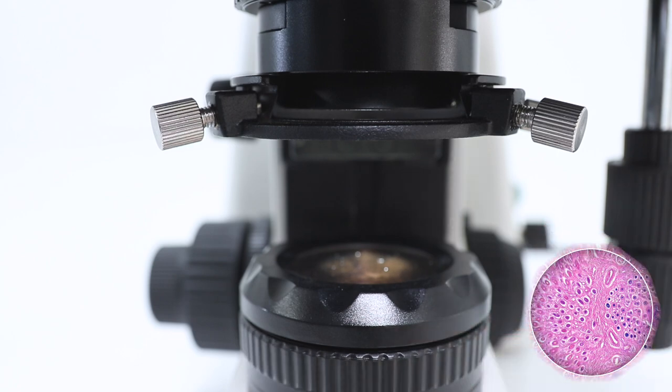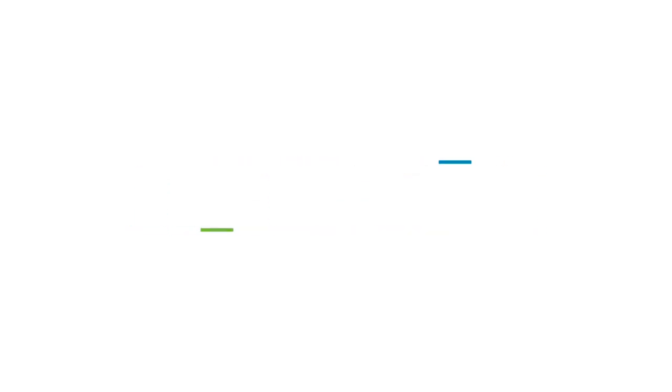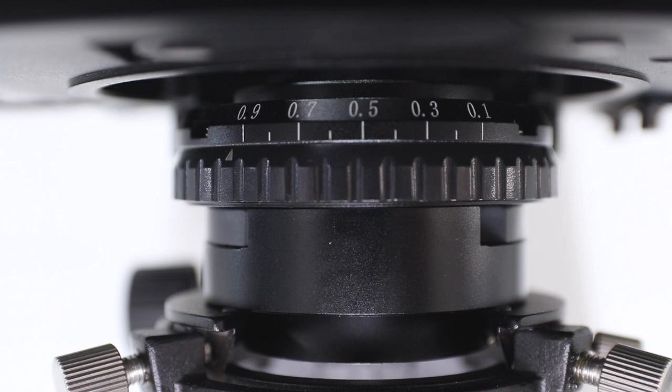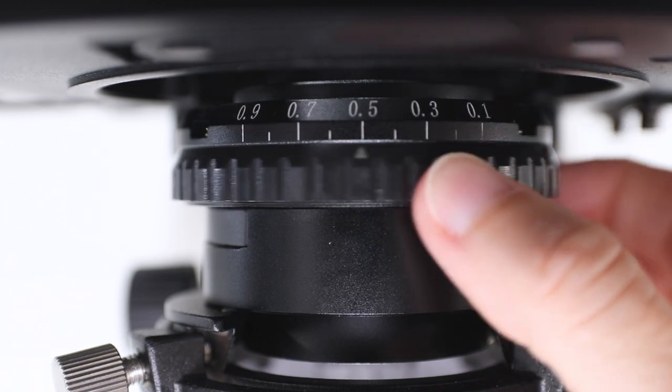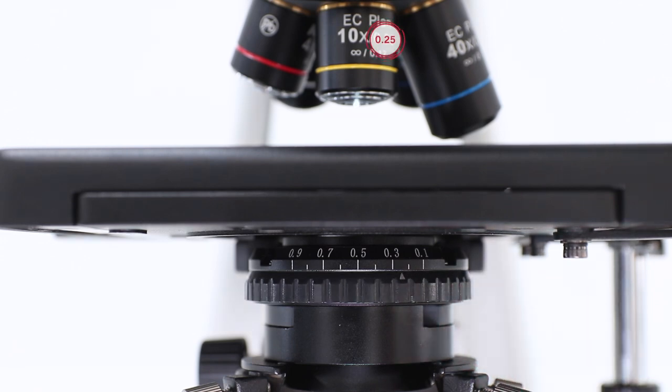For the aperture diaphragm, depending on the condenser, this can display different scales showing either the aperture or the magnification of the objectives. The aperture diaphragm should be adjusted in accordance with the numerical aperture of the objective to obtain a well-balanced image in terms of brightness and contrast. Use the same numerical aperture of the objective, or as we recommend, use a little bit less than indicated to get even better results.